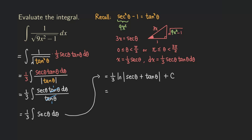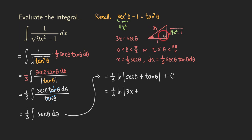The remaining steps are to replace all expressions in theta using our right triangle to get the answer in terms of x. Secant theta is simply 3x. Tangent theta is opposite over adjacent, which is the square root of 9x squared minus 1 over 1. So the final answer is one-third times ln of the absolute value of 3x plus the square root of 9x squared minus 1, plus C.